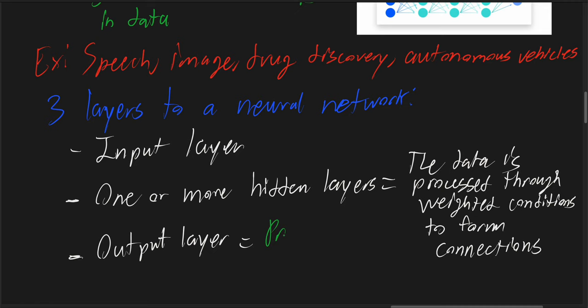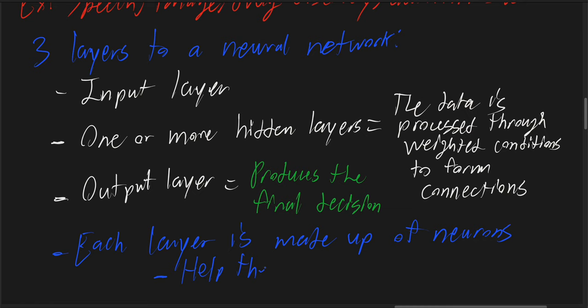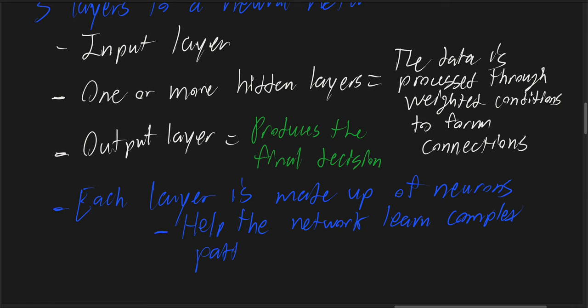The output produces the final decision, and each layer is made up of units called neurons which go through activation functions to help the network learn complex patterns.